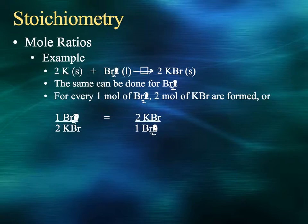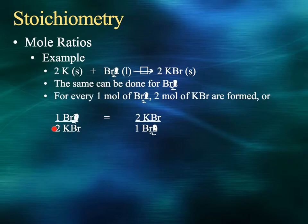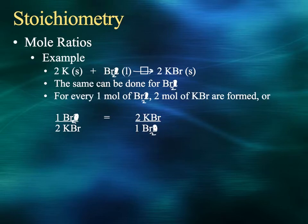Some more examples with the same potassium-bromine equation. We can also write the ratios in terms of bromine. For every one mole of bromine molecules, two moles of KBr are formed. You can write that as one mole of bromine per every two moles of potassium bromide, or flip it — two moles of potassium bromide per every one mole of bromine, since they are equivalent amounts and it's a conversion factor.